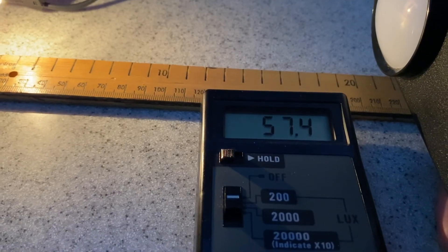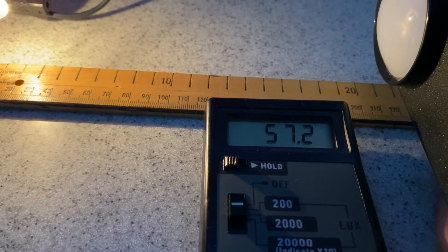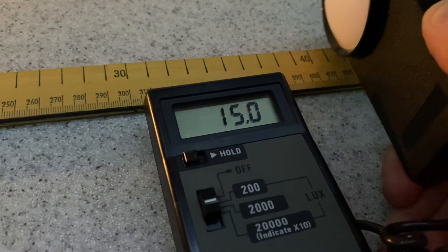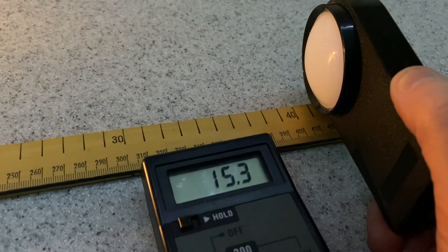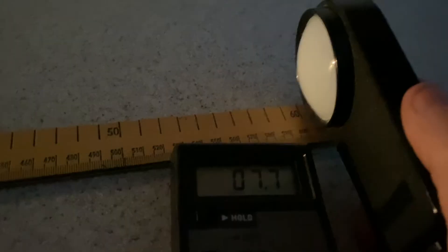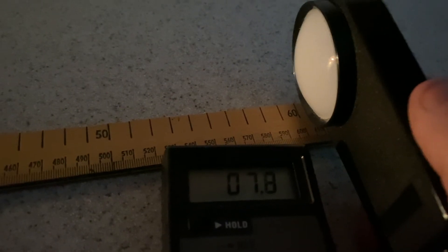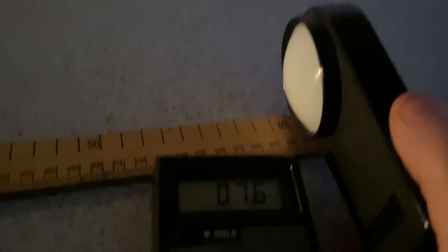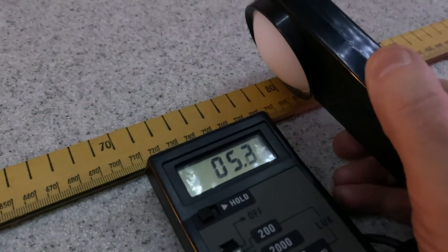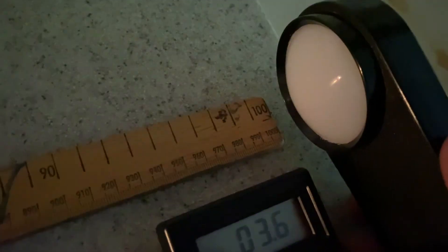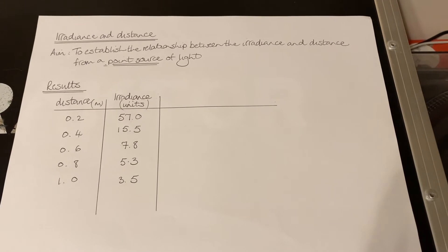We're getting 57—about 57 units of irradiance. Next one: 15.5 at the 0.4 meter mark. And 0.6 meters: 7.8. At 0.8 meters we'll go for 5.3, and the last one: 3.5 at one meter.